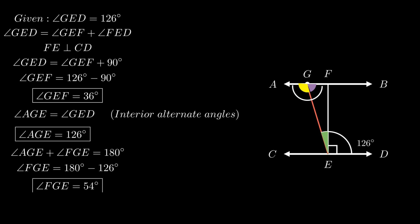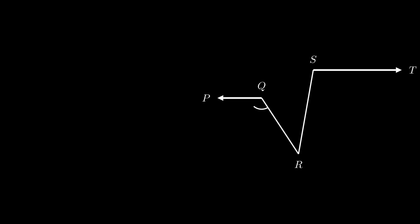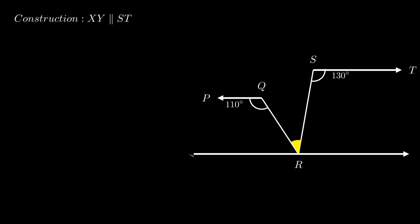Moving on to the fourth problem. The problem states that segment PQ is parallel to segment ST, angle PQR equals 110 degrees, and angle RST equals 130 degrees. We need to find angle QRS. Since angle QRS is not formed on either parallel line, it is impossible to establish a direct relationship with the given angles. So we construct a line XY parallel to segments PQ and ST, touching at point R.